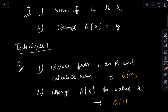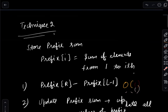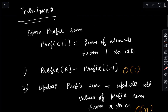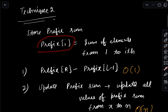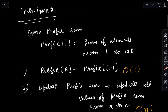Let's try a different technique. We do some pre-processing and store a prefix sum array where prefix[i] stores the sum of elements from 1 to i. Now for the first query — sum from l to r — we compute prefix[r] minus prefix[l-1], which gives us the answer in constant time O(1).